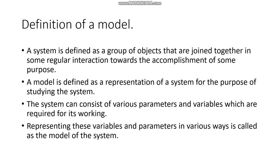A system is defined as a group of objects that are joined together in some regular interactions towards accomplishment of some purpose. So what this means is a system is a group of objects or variables which usually interact with each other, and this interaction accomplishes some purpose for the entire system.